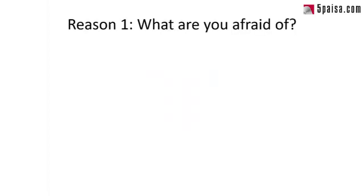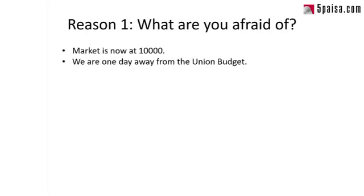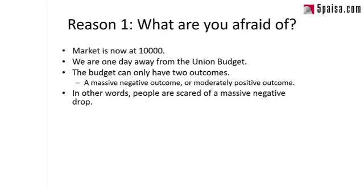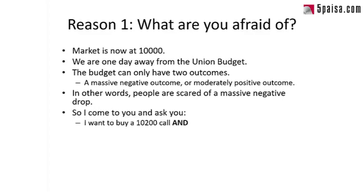Reason number one broadly answers: what exactly are you afraid of while option trading? Let's say the market is at 10,000, we are one day away from the Union Budget, and the budget can have only two outcomes: a massive negative outcome, or a moderately positive outcome. People are scared of a massive negative drop and not so scared of the other because it's moderate. So I come to you and ask: I want to buy a 10,200 call and a 9,800 put.